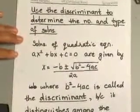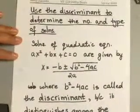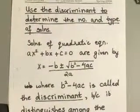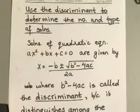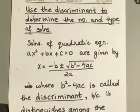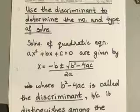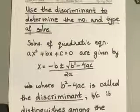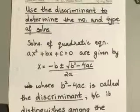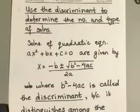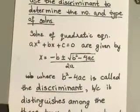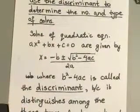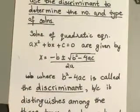The next thing I would like to talk about in this section is what we call the discriminant. We're going to use the discriminant to help us determine how many solutions we are going to have and what type of solution it is going to be. So before we talk about that, let's see what exactly we mean by a discriminant.